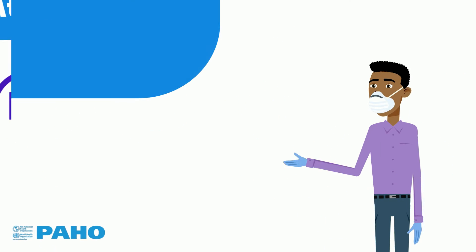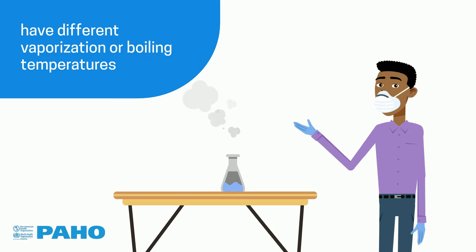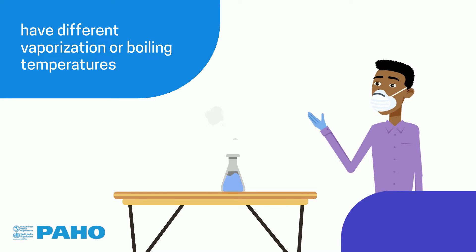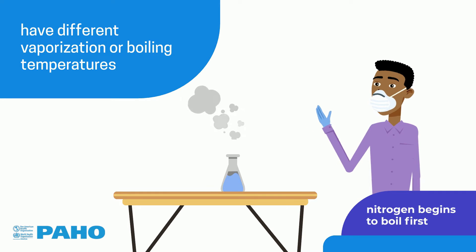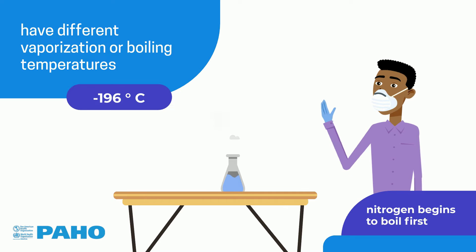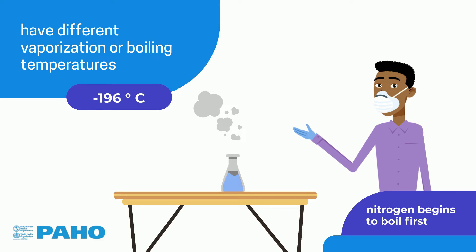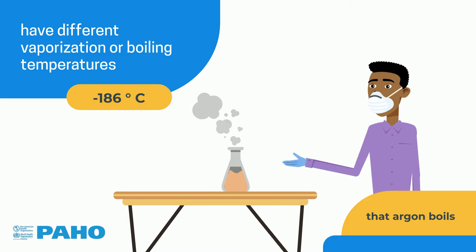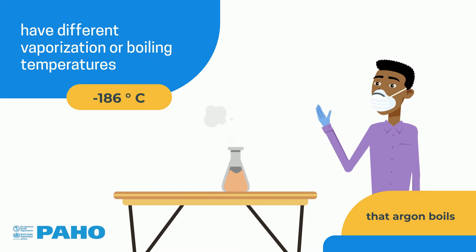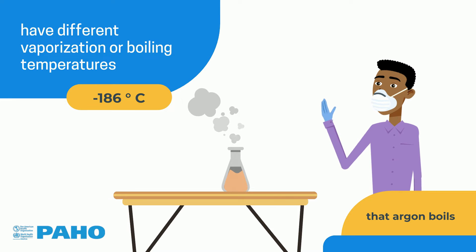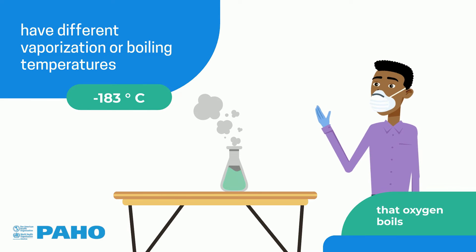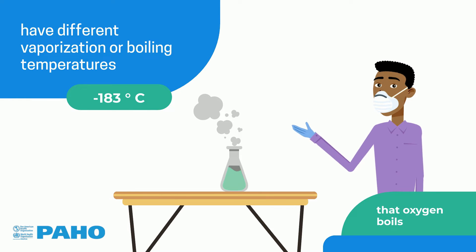These gases have different vaporization or boiling temperatures. Nitrogen begins to boil at minus 196 degrees Celsius, argon boils at minus 186 degrees Celsius, and oxygen boils at a temperature of minus 183 degrees Celsius.